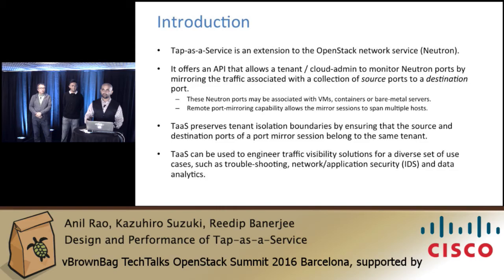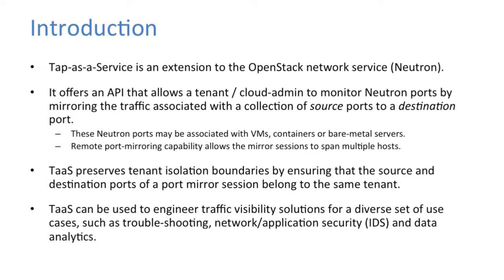Good afternoon everyone. Let us first introduce what exactly TAP as a service is. TAP as a service is basically an extension of the Neutron networking service in OpenStack. What it actually offers is an API which allows you to mirror the packets coming in onto a particular port into another section, like a VM or another port, where you can actually analyze that packet. The ports which can be mirrored are basically the ports of a VM, a container, or a bare metal.